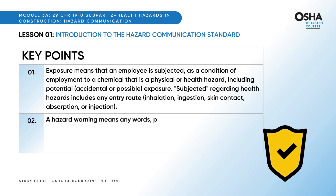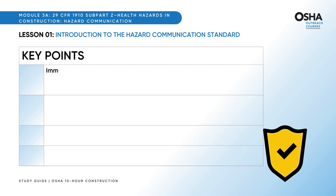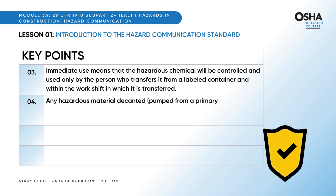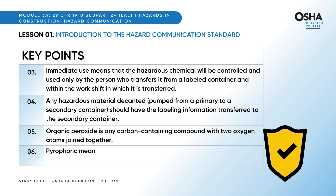A hazard warning means any words, pictures, symbols, or combination thereof appearing on a label or other appropriate form of warning that conveys the specific physical and health hazards, including target organ effects, of the chemicals in the containers. Immediate use means the hazardous chemical will be controlled and used only by the person who transfers it from a labeled container and within the work shift in which it is transferred. Any hazardous material decanted or pumped from a primary to a secondary container should have the labeling information transferred to the secondary container. Organic peroxide is any carbon-containing compound with two oxygen atoms joined together. Pyrophoric means a chemical will ignite spontaneously in air at a temperature of 130 degrees Fahrenheit (54.4 degrees Celsius) or below.